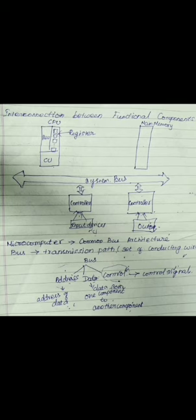So bus can be classified into three types: one is address bus, data bus, and control bus. Address bus will carry the address of data. Data bus will carry the data which we need to process or produce as output. Control bus will carry the control signal. These are the things happening inside our computer — all these components are connected with the help of the bus.